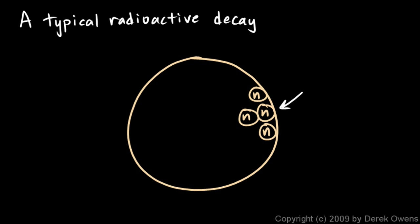This neutron right here, because it doesn't have protons around it, it will undergo this process. The neutron decays into a proton and an electron.